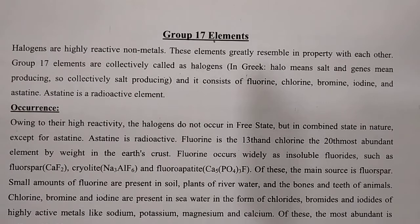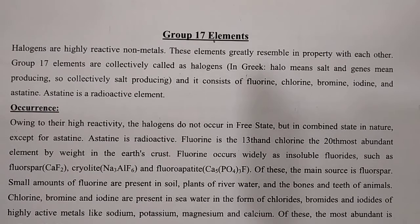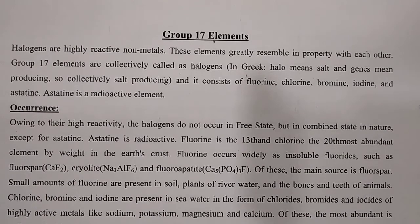Halogen includes fluorine, chlorine, bromine, iodine, and astatine. Halogens are really very reactive with group number 1 and group number 2, and are converted into many salts. In Greek, 'halo' means salt and 'genesis' means producing, so collectively it means salt-producing. This is completely true because group 17 family members are always hungry for one electron, while group 1 family members are always ready to release one electron. Due to this, group 1 and group 17 can produce so many different kinds of salts.